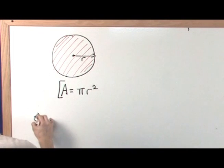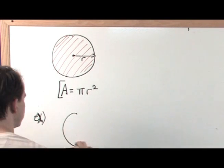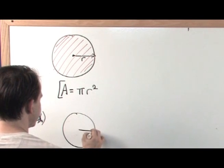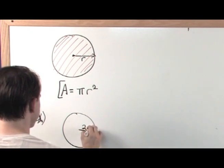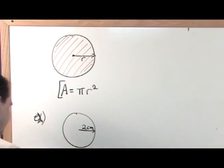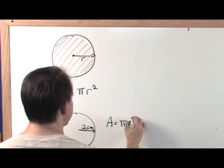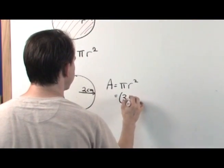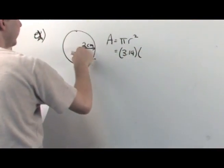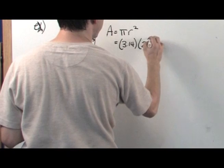So as an example, you have a circle, and the radius is 2 centimeters. Then the area is equal to pi r squared, which is equal to 3.14. That's pi. r is 2, so it's 2 squared.